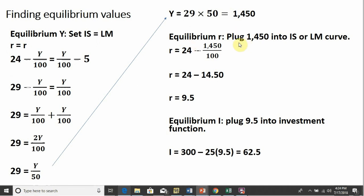To get the equilibrium R level, we will plug this 1,450 either into the LM or IS curve. And I plugged it into the IS curve, which again is right here. So doing that, simplifying, we get the interest rate, equilibrium interest rate, of 9.5%.